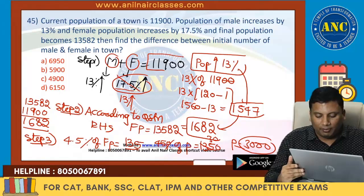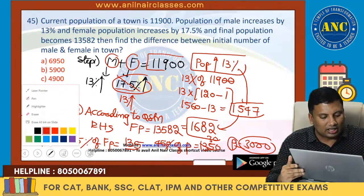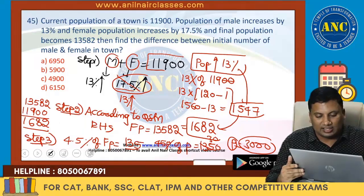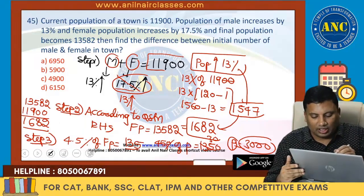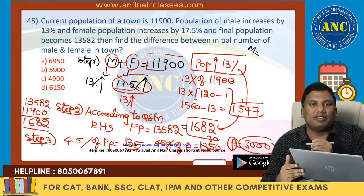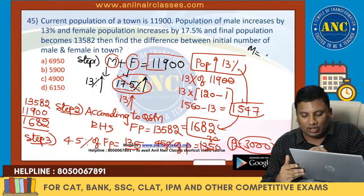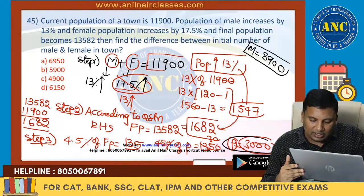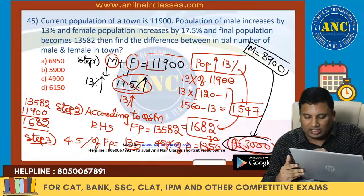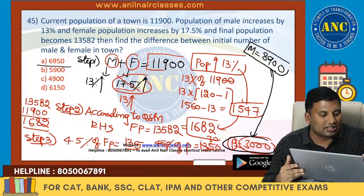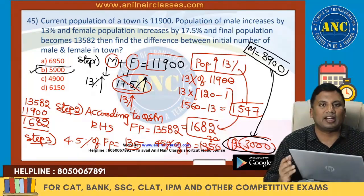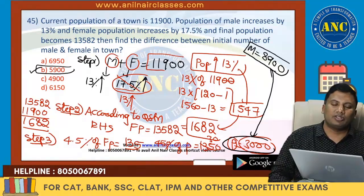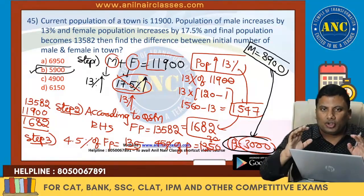If the total population of female is 3000, what will be male? Male is nothing but 11,900 minus 3000, which is 8,900. Male is 8,900. Female is 3000. What is the difference? Difference is 5,900.